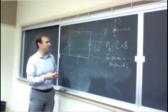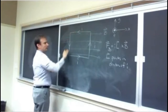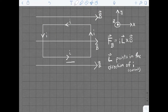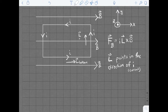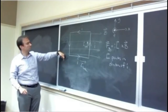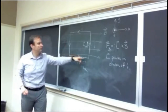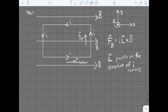The direction that L vector points is the direction that current flows. For instance, looking at this loop of current, the bottom section points to the right, so L vector for the bottom points right. For the right-hand side, L points up; on the top it points left; and on the left it points down. So L vector simply follows the current direction in each section of this square loop.